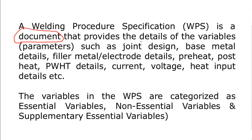The most common variables mentioned in WPS include joint design — whether it is single V, double V, U groove, or V groove — then base metal details such as specification, grade, P number, and G number of the base metal.